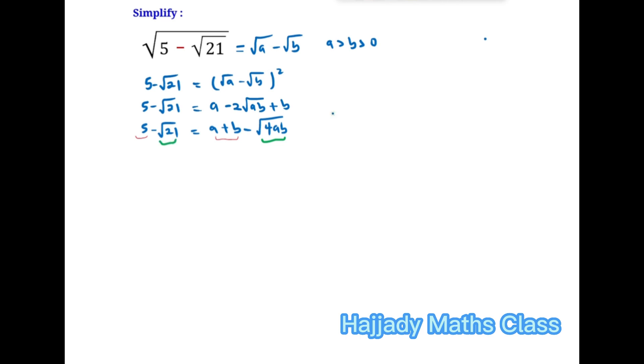So I'm going to have A + B = 5. You can call that your equation 1. And also, √4AB = √21. I can call that my equation 2.